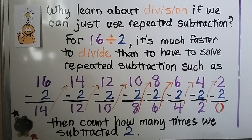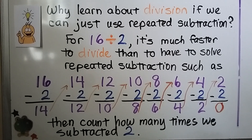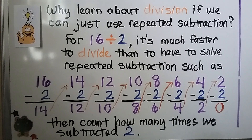So 16 divided by 2 is equal to 8, but it's much quicker to just do division. We can use repeated subtraction as a strategy if we need extra help, but division is much faster.